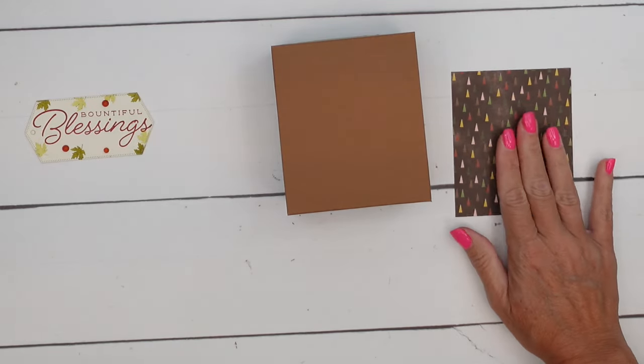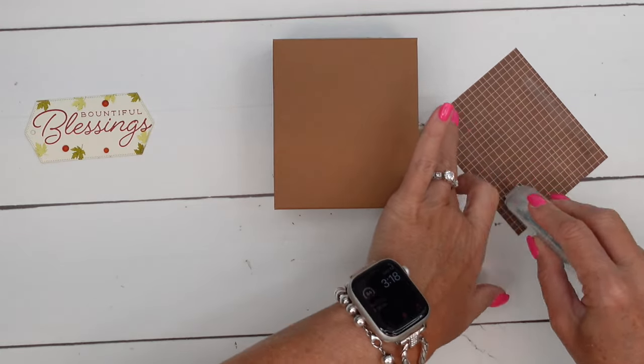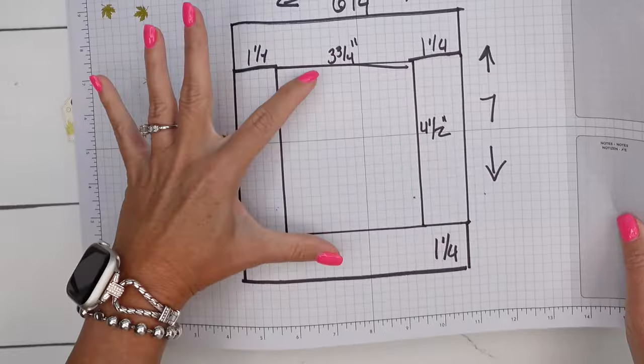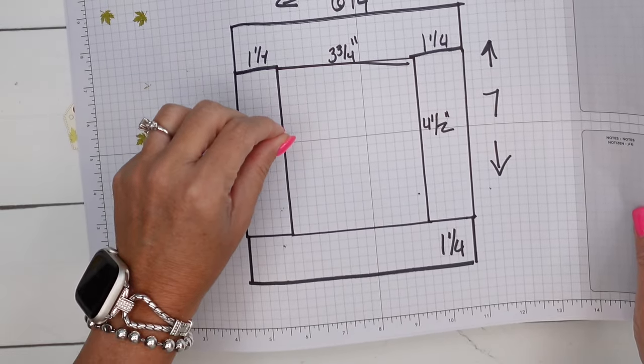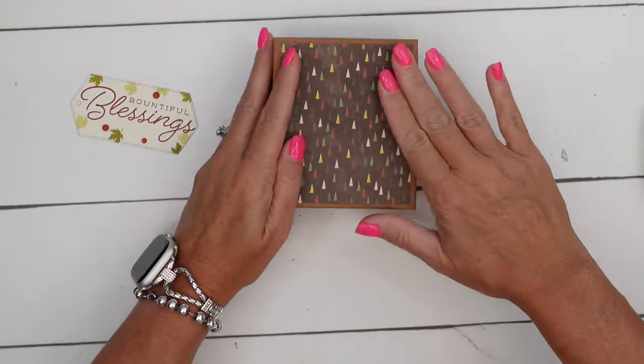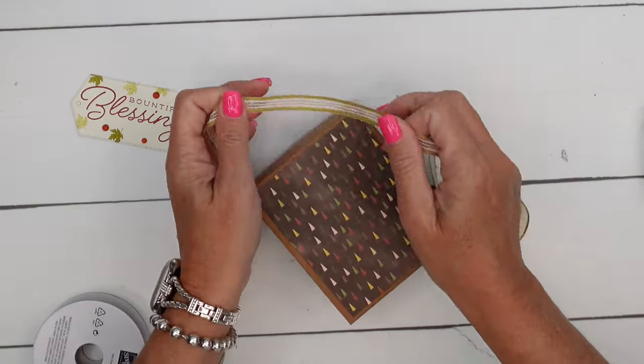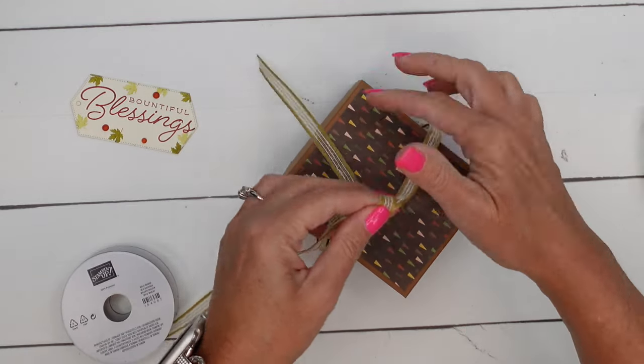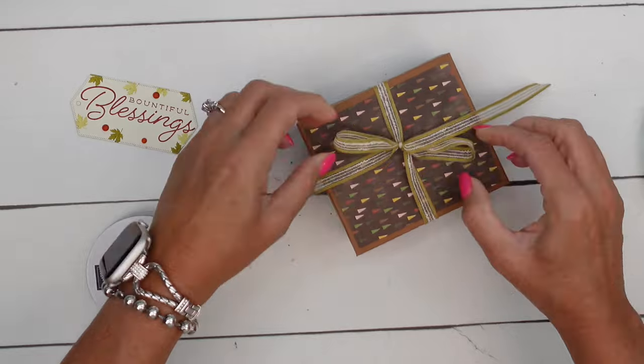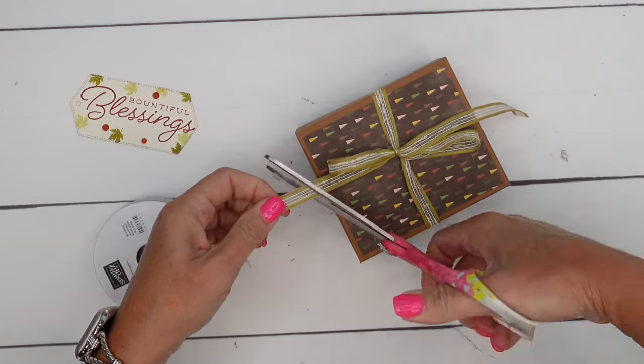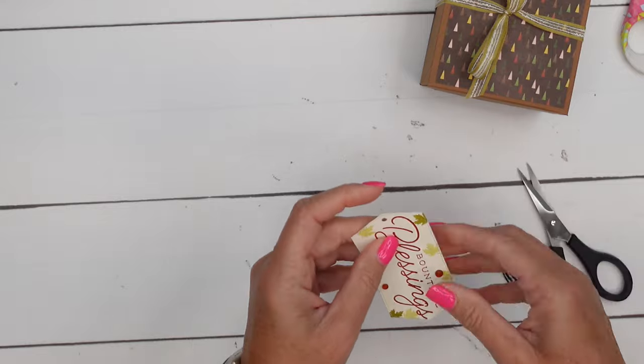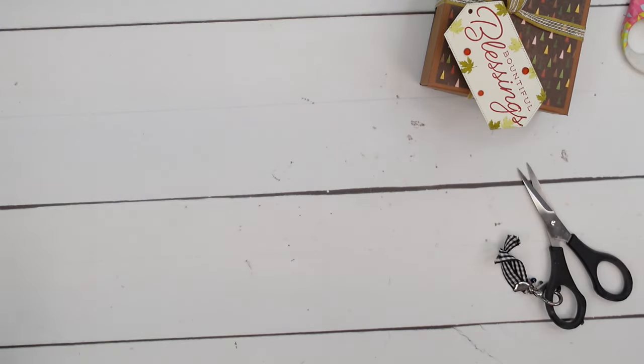Now get your designer series paper. And since this box bottom part was three and three fourths by four and a half, you want to make your designer series paper either an eighth or a quarter of an inch smaller on each side. And you put that right there. I'm going to use our new wild wheat ribbon to hold it together.